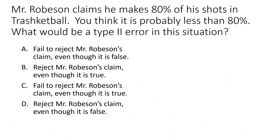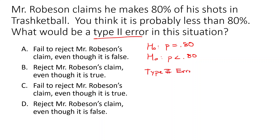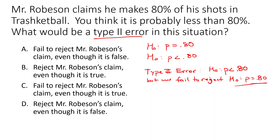Let's take another look. Mr. Ropeson claims that he makes 80% of his free throw shots, so our null hypothesis is p = 0.80. You think it's probably less, so your alternative hypothesis is p < 0.80. What would be a Type 2 error? The Type 2 error is when the second hypothesis — the alternative — is true, so p is actually less than 0.80, but we failed to reject the null hypothesis. That's the mistake: we go ahead and say p is roughly equal to 0.80. We fail to reject Mr. Ropeson's claim, even though it's false.